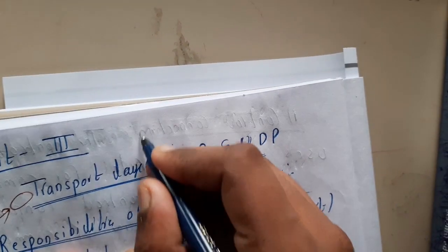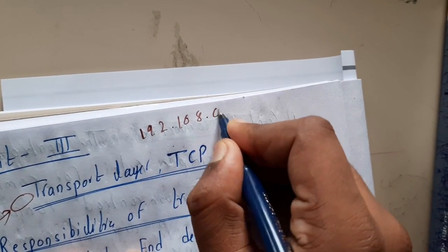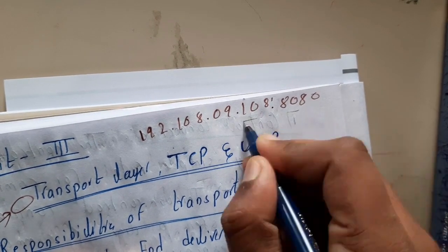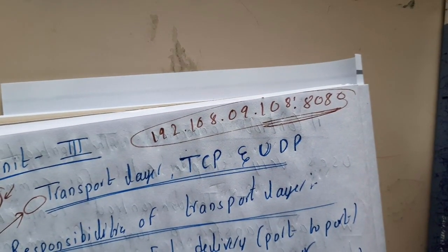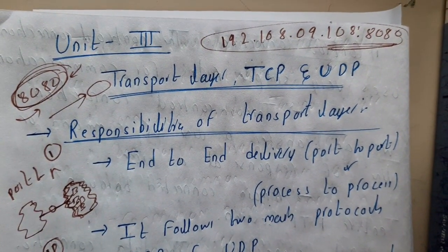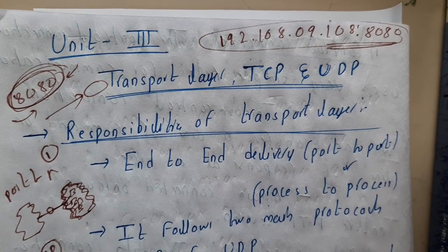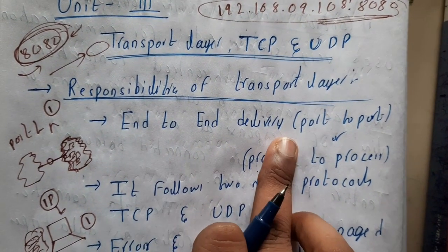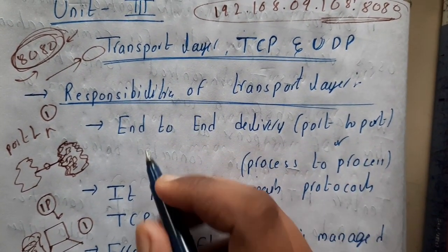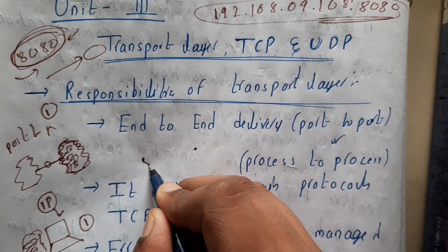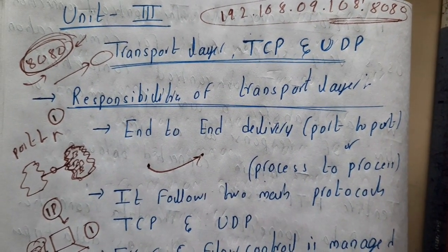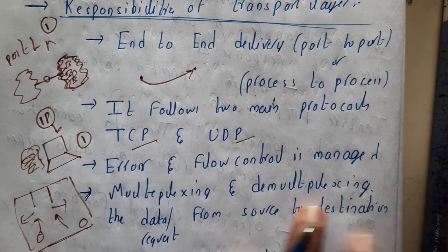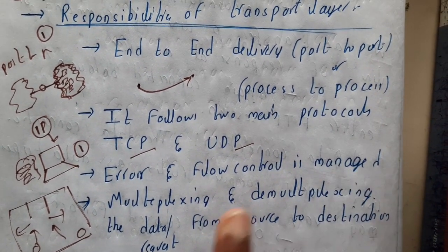So basically, your IP address is written first, and then the port number is added with a colon — this becomes your new address. Now let us go through some theoretical explanation about the transport layer and the services it provides. The responsibilities of the transport layer include end-to-end delivery, which is nothing but port-to-port or process-to-process communication. It follows the two main protocols: TCP and UDP. Error and flow control is also managed by the transport layer.